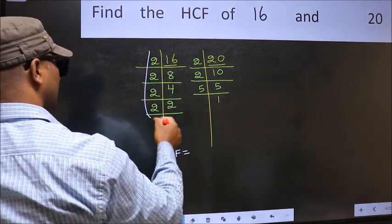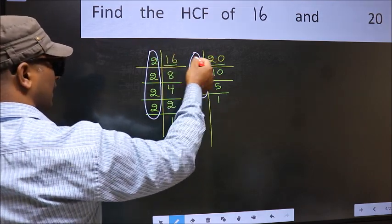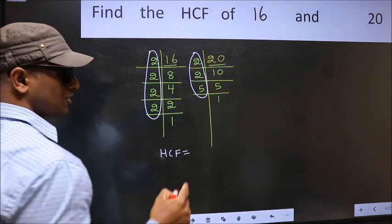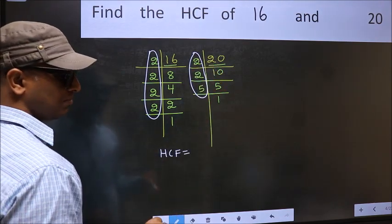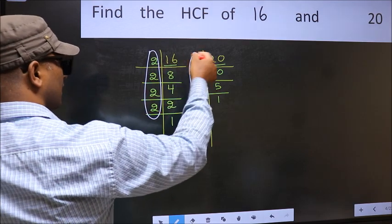That is here and also here. Here and here. So now let us find the numbers which should be present here and here.